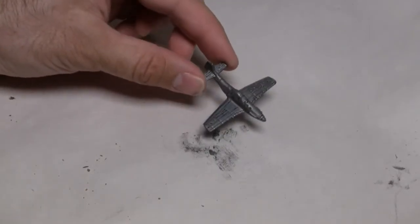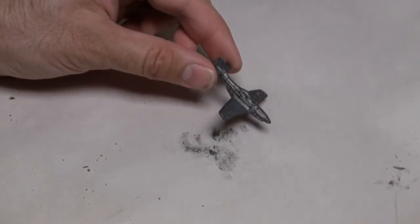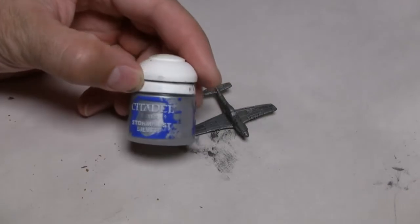First silver layer is down. You can see the plane now has a bit of a sheen to it. I want to make it shine even more.